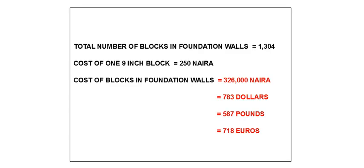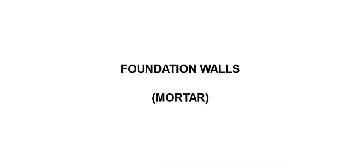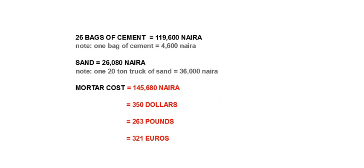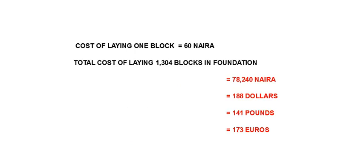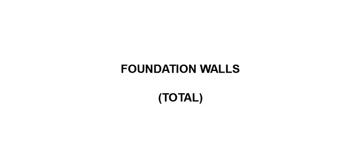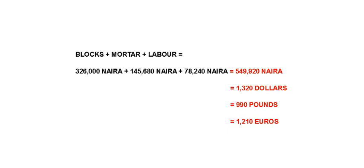Next we'll move over to the foundation walls. The blocks for the foundation walls will cost 326,000 Naira, approximately 783 dollars or 587 pounds. The mortar will cost 145,680 Naira, approximately 350 dollars, 263 pounds or 321 euros. The cost of laying the blocks is 78,240 Naira, approximately 188 dollars, 141 pounds or 173 euros. So the total cost of the foundation walls is 549,920 Naira, approximately 1,320 dollars, 990 pounds or 1,210 euros.